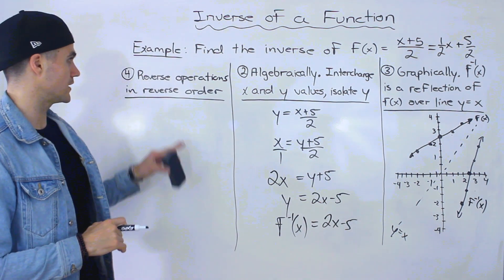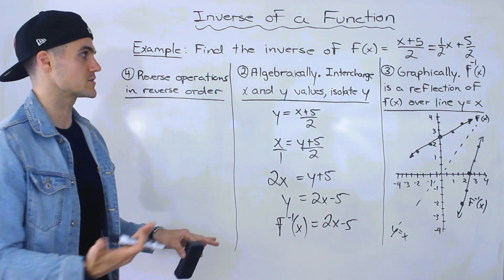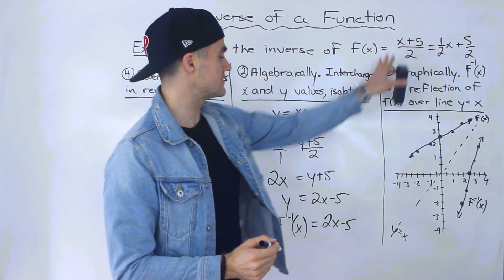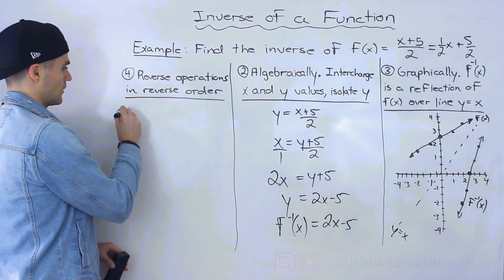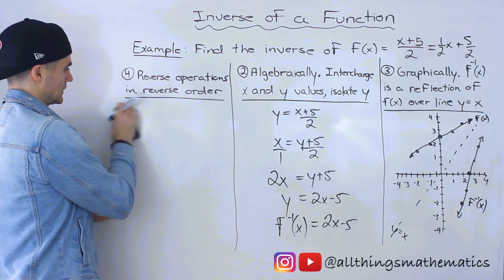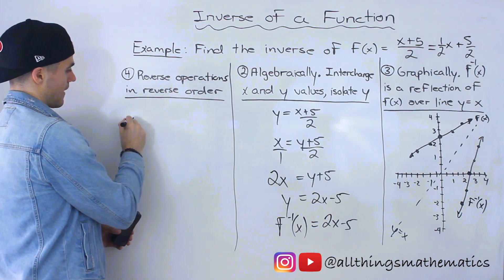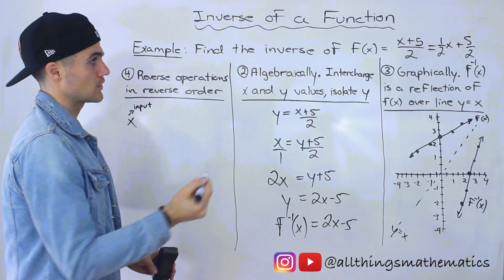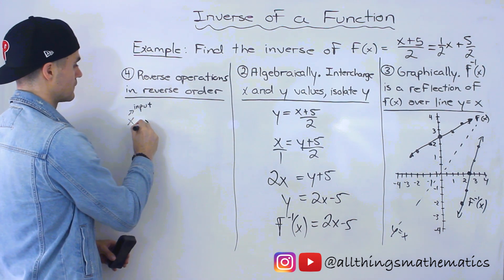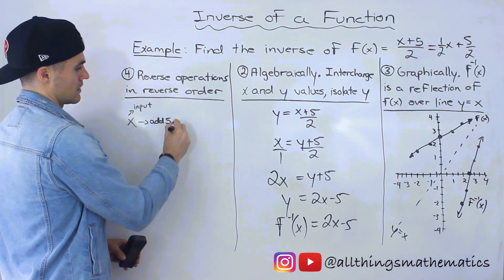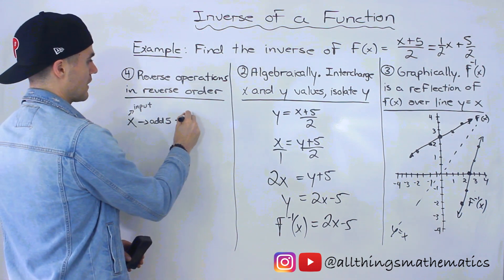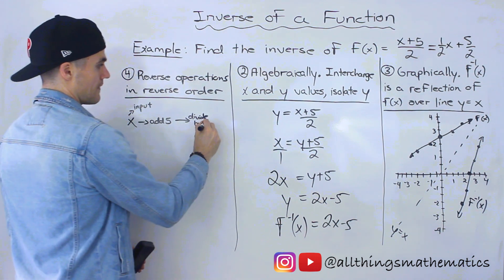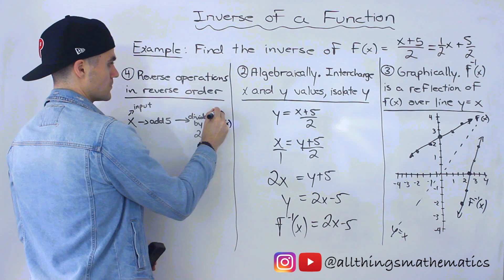And then the last way to do this is we could reverse the operations in reverse order. So notice that if we take the x value of the function, we have x, which is our input. What are we doing with that x value? We're adding 5, and then once we've added 5, we're going to divide by 2. And then that will give us our f of x, which would be our output.